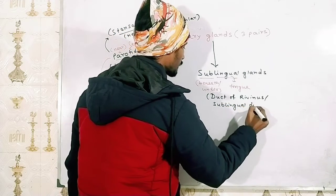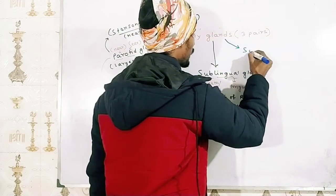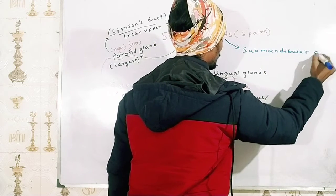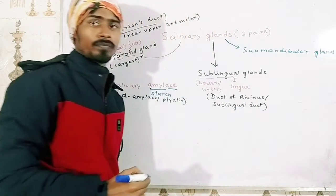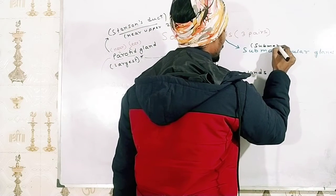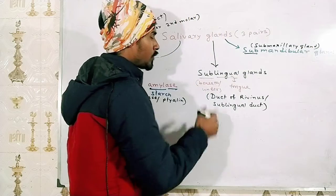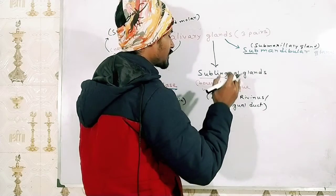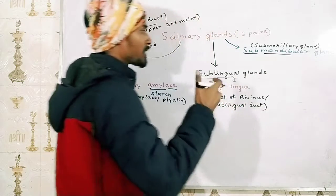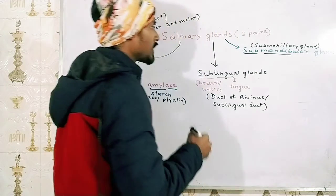Now the third gland we are going to talk about is the submandibular gland. It is also termed as submaxillary gland. If you look at the term, you will get to know that sub means beneath or under, and mandible is the lower jaw. So it is present just beneath or under the mandible, and that's why it is named as submandibular gland.